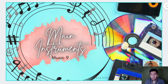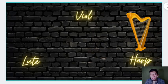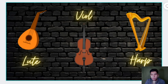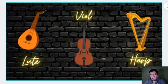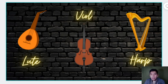We have here the three main instruments of the medieval period. The first one is the lute, the second one is the viol, and the last one is the harp. The harp is personally one of my favorite instruments — the sound is so relaxing when you listen to it. Those are the three major instruments during the medieval era.